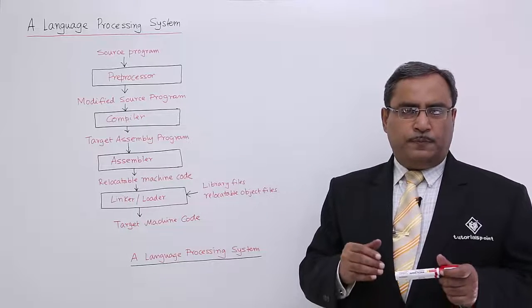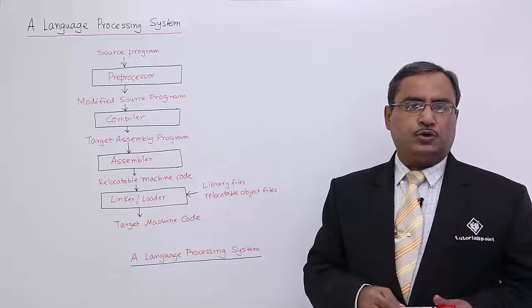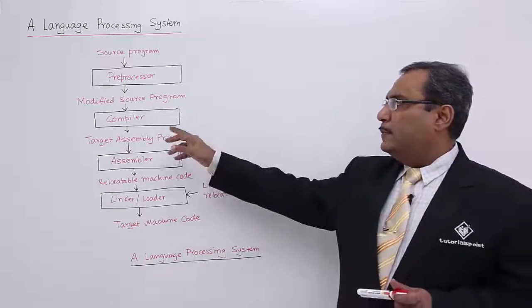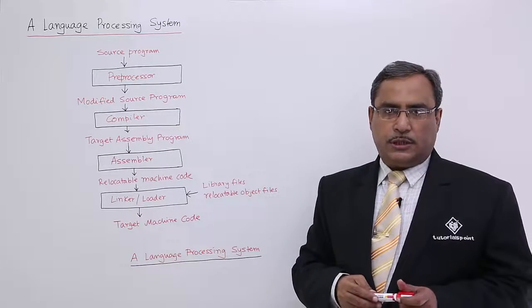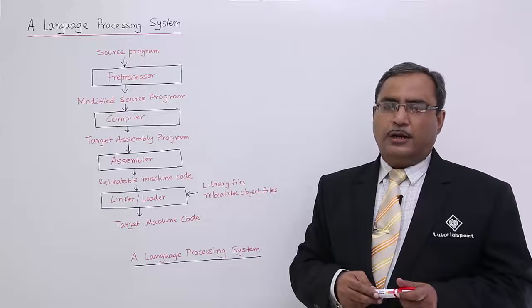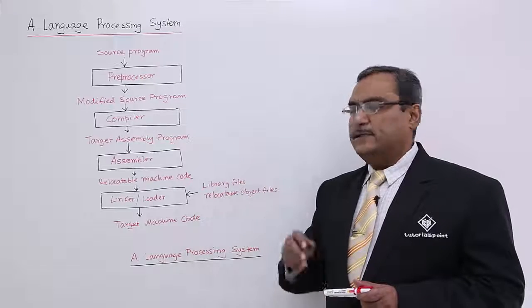So, preprocessor will make the source program into a different version of the source program. And the modified source program will be made available to the compiler for the compilation process. Compilation means it will do the required translation and it will produce the program in some target language known as the assembly language.